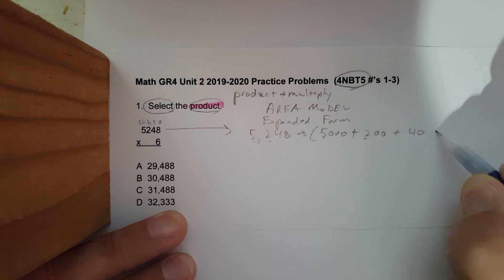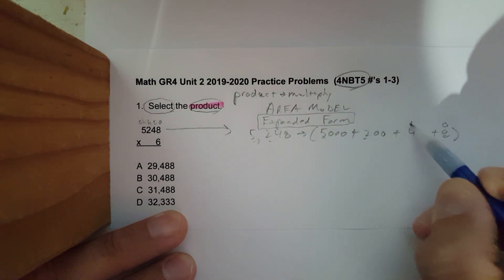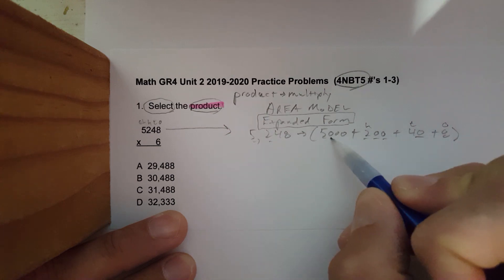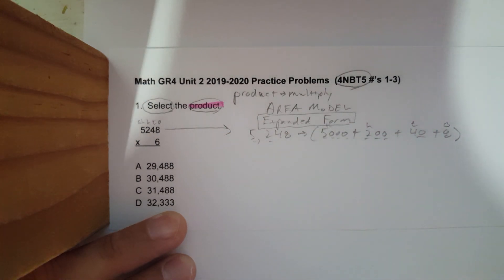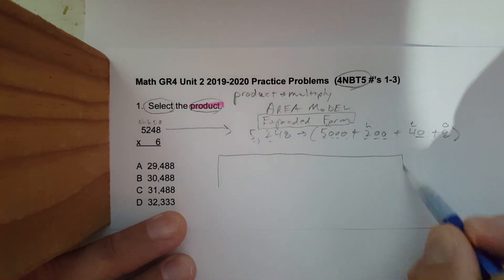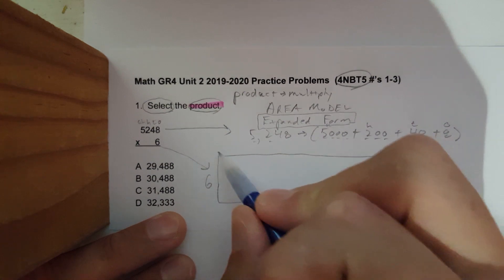40 plus 8. Again, this is in expanded form. Do the ones, tens, hundreds, thousands. Now we're going to draw the model. This is not to scale. The six comes over here, we put a multiply sign over here.